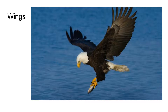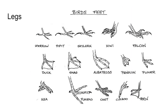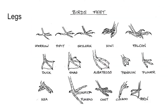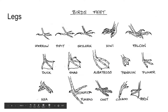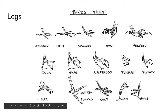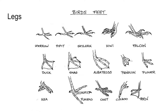Their hind limbs are typically adapted for their lifestyle, whether that be perching, walking, swimming, or predation — like this bird here with very well-adapted claws. This falcon is clearly adapted for killing things, whereas the duck is more adapted for swimming, as is the albatross. Some birds like the coot have modified feet that allow them to swim but also walk around. Penguins are another example. Legs are typically modified for lifestyle.